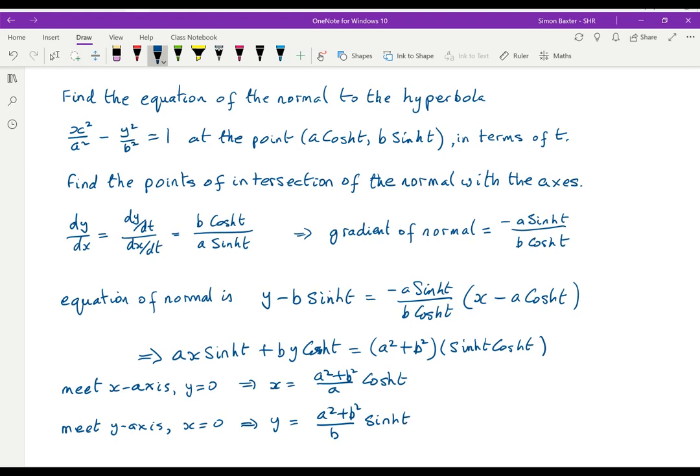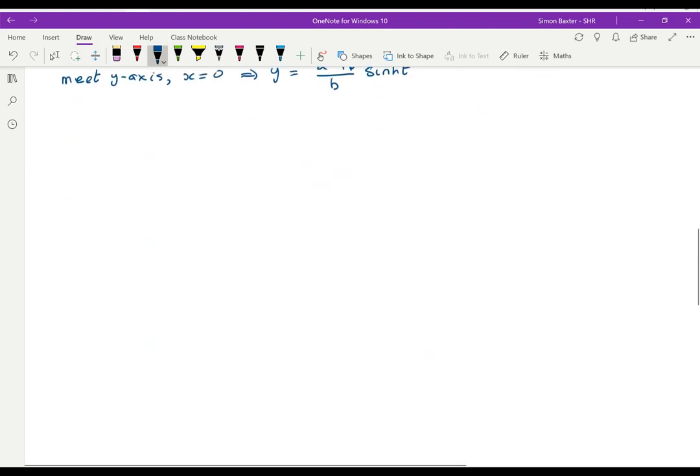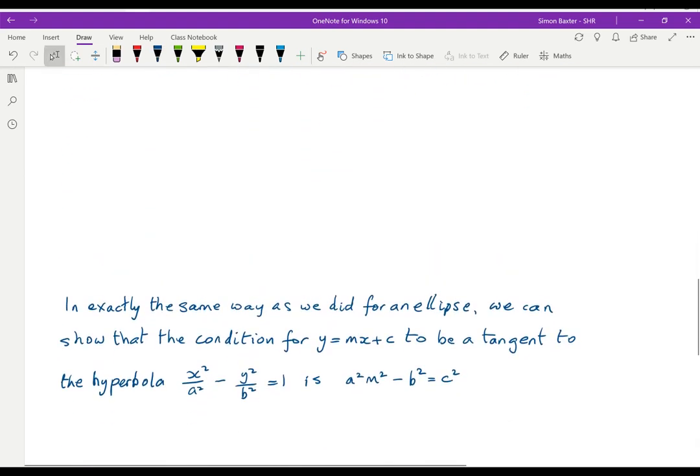Nice, simple little problem. The last result I want to do with this is the same way as we did for an ellipse. If we want the condition that y = mx + c should be a tangent to the hyperbola, then there is the condition. That's exactly the same procedure as we did when we looked at an ellipse.